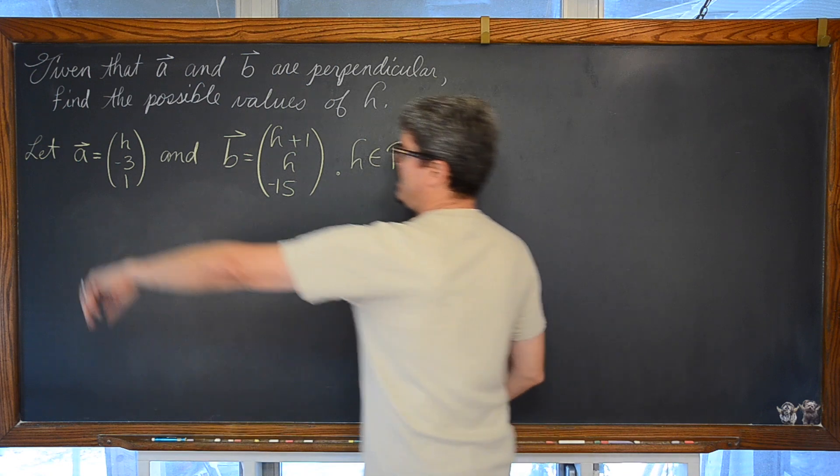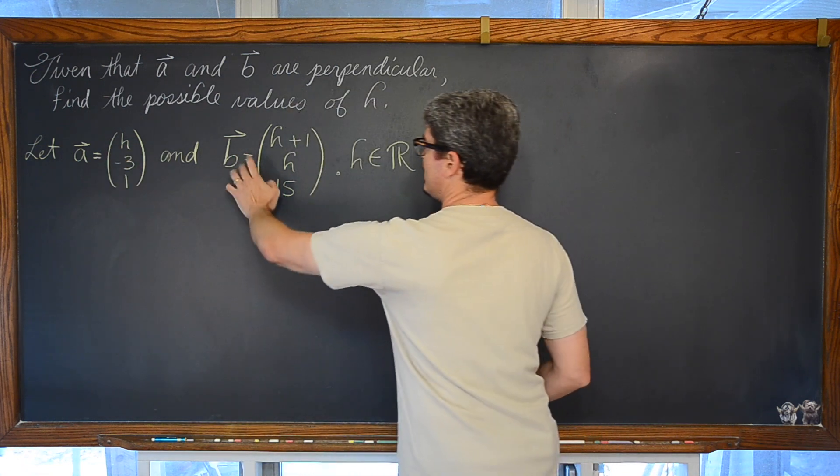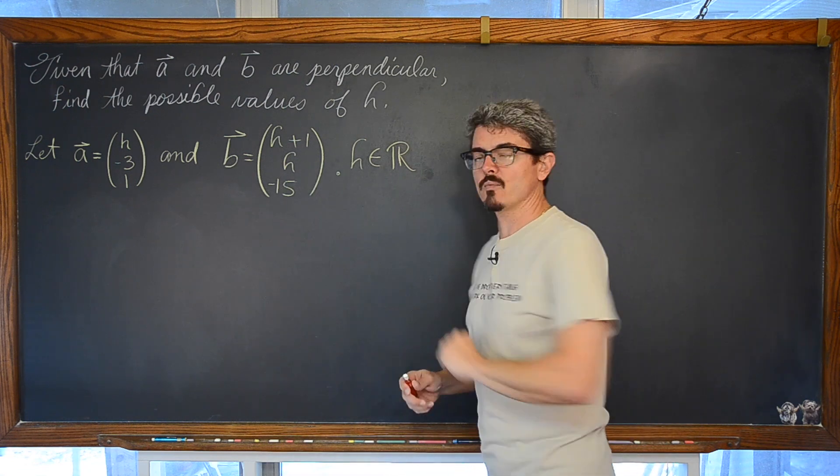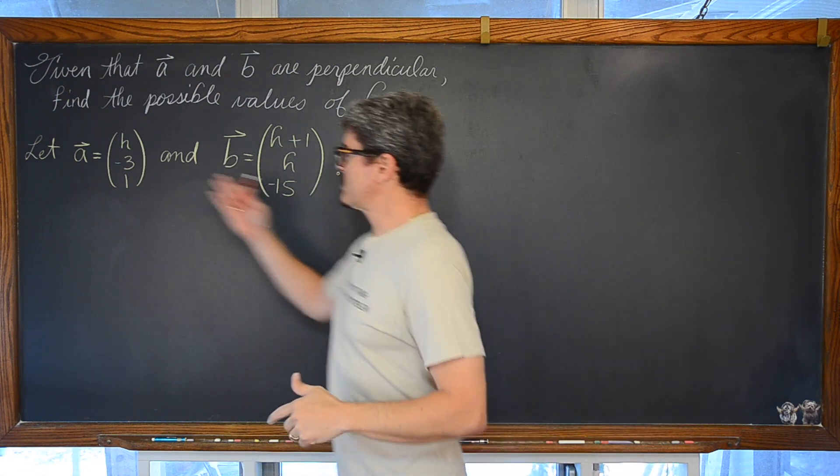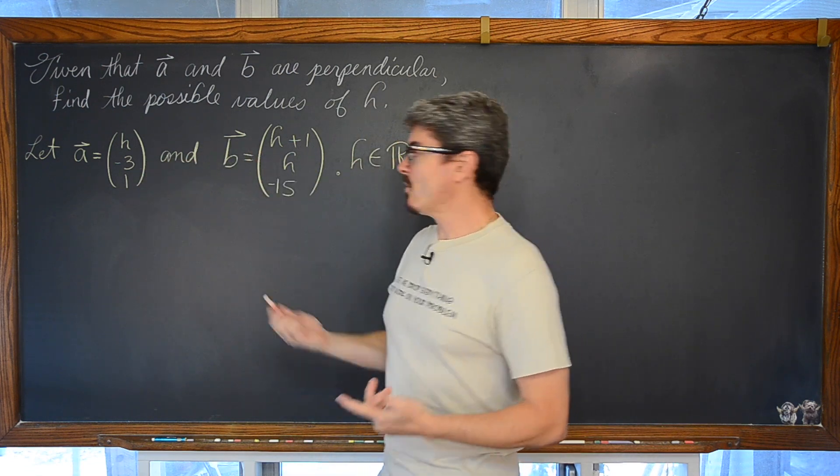We have vector A, has the components of H, -3, and 1. And vector B is equal to H-1, H, 15. If you do not recognize this notation, it is just the way that my textbook is writing these vectors in component form.